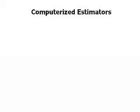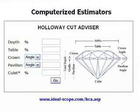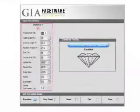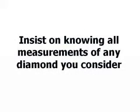Proportions assessment can also be done with a computerized estimator. In 2001, Australian geologist Gary Holloway introduced a popular online cut advisor. As of 2006, the GIA is grading cut with a similar online estimator called Facetware. Their top grade of excellent allows numbers farther away from Tolkowsky, but is still a good assurance of quality. Whether you target the most elite proportions or not, it's reasonable to insist on knowing all measurements of any diamond you consider from any seller.